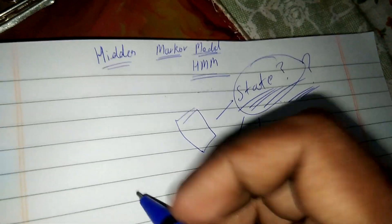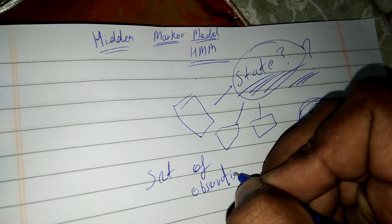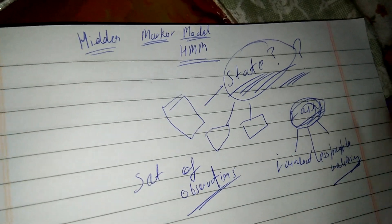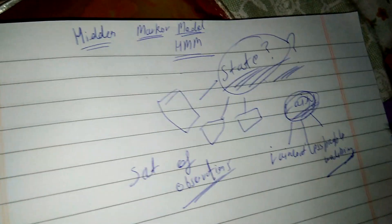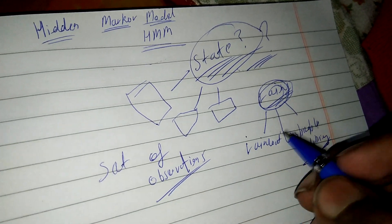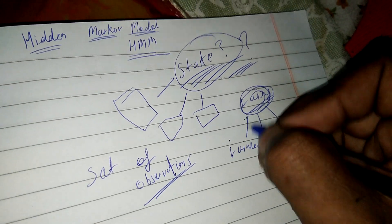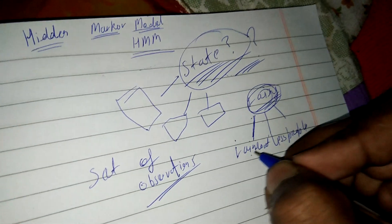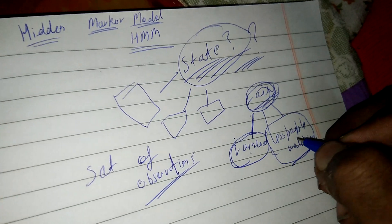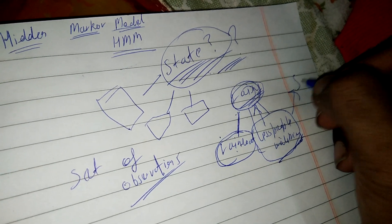A hidden Markov model is based on a set of observations. As you can see — sorry, ignore the spelling mistakes, I want to define it as fast as I can — it is defined on emission probabilities. Like what is the probability: if more people are wearing rain coats and less people are walking out, it is more likely to be rainy compared to any other state, like sunny.